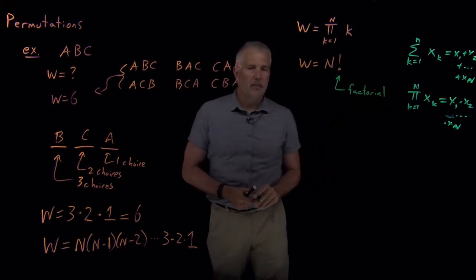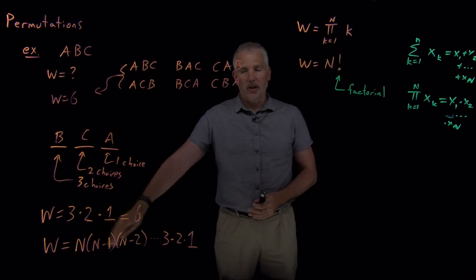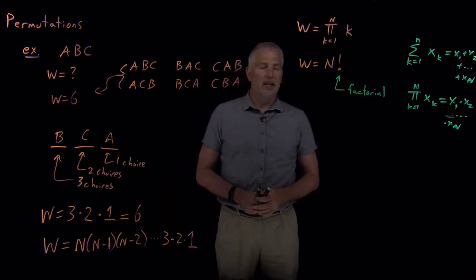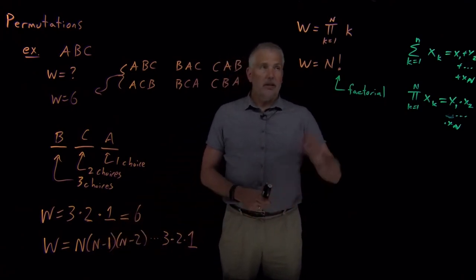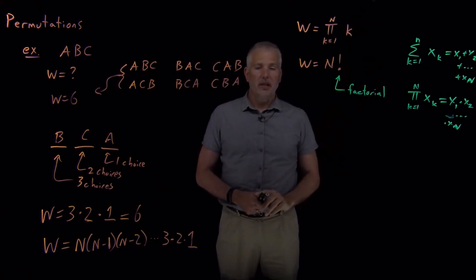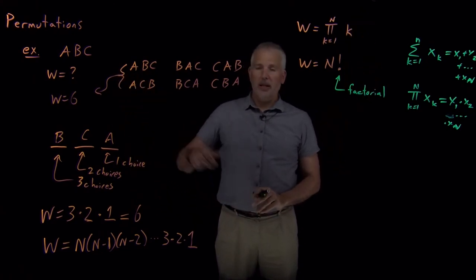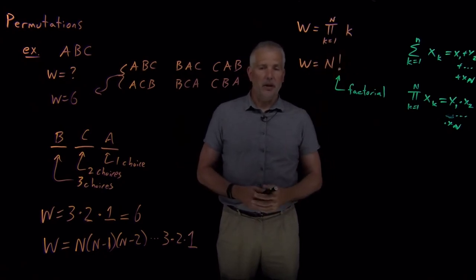Instead of writing the product of all the numbers from 1 through N, I can write it as N with an exclamation point, where this is called factorial notation. If I say calculate N factorial, that just means calculate the product of 1 times 2 times 3, running all the way up until N at the top end. The number of ways of permuting N objects is N factorial, or the product of 1 up through N.